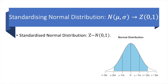This standard distribution, the standardized normal distribution, is called a Z distribution and is calculated by subtracting the mean and dividing by the standard deviation.